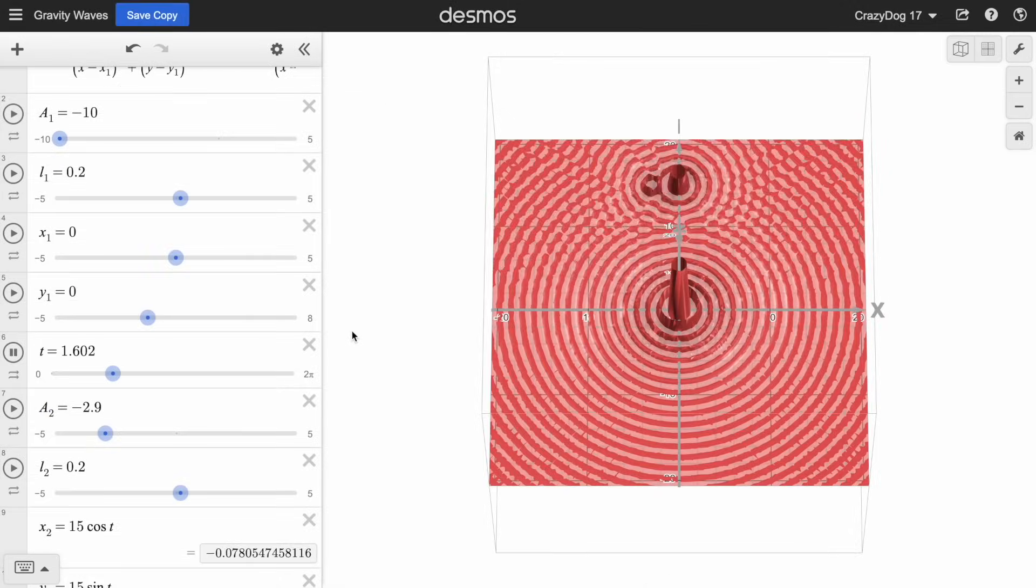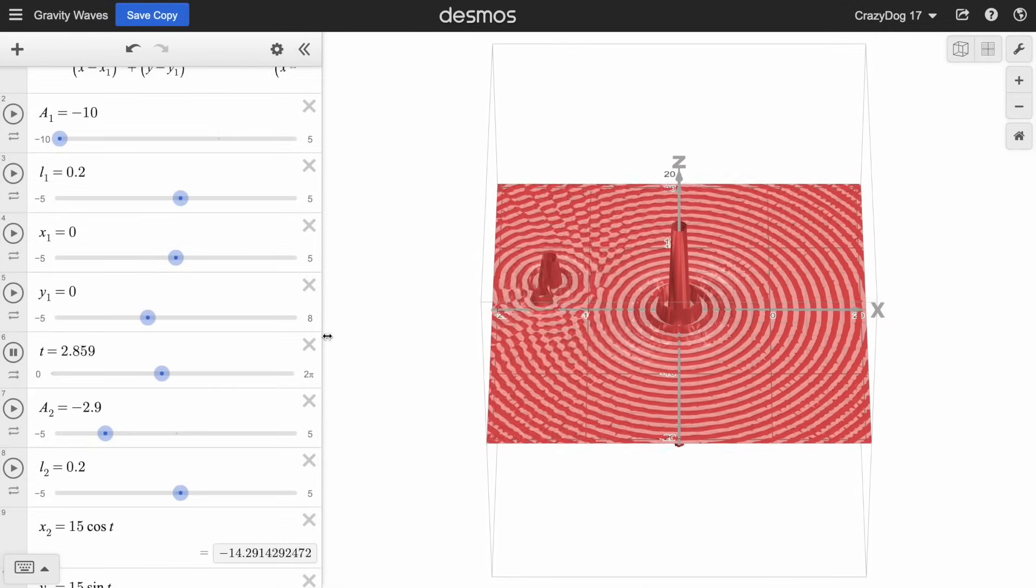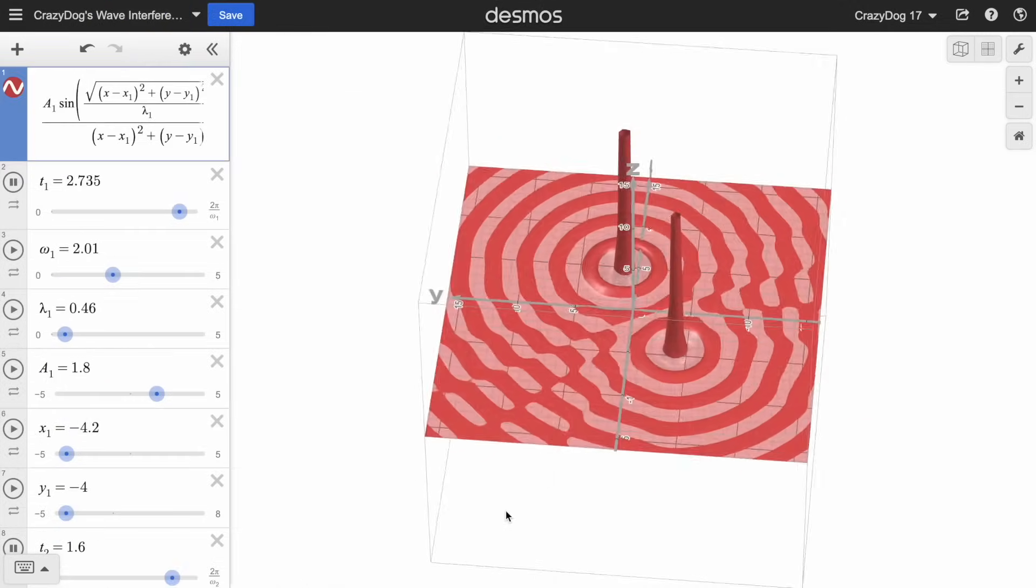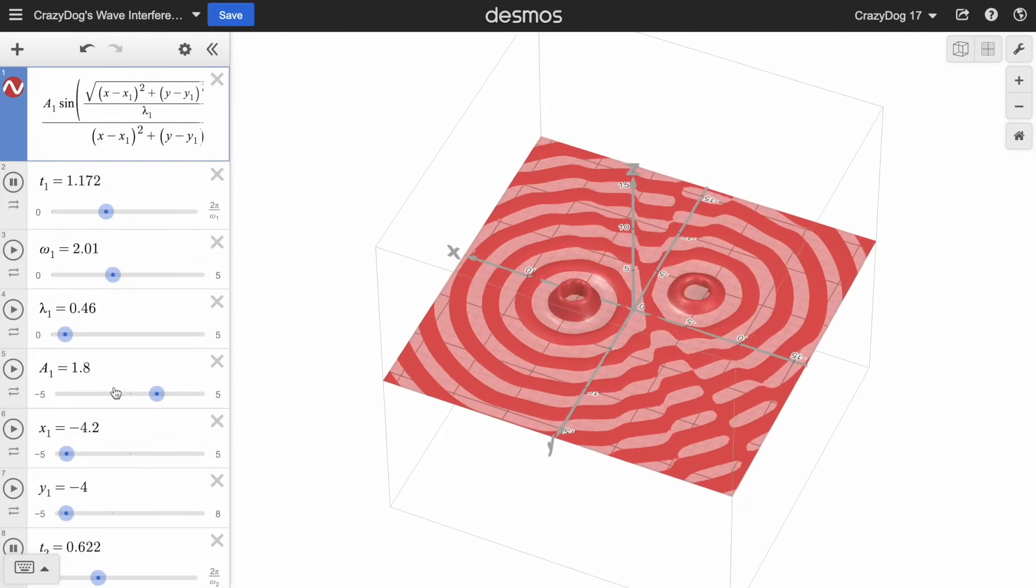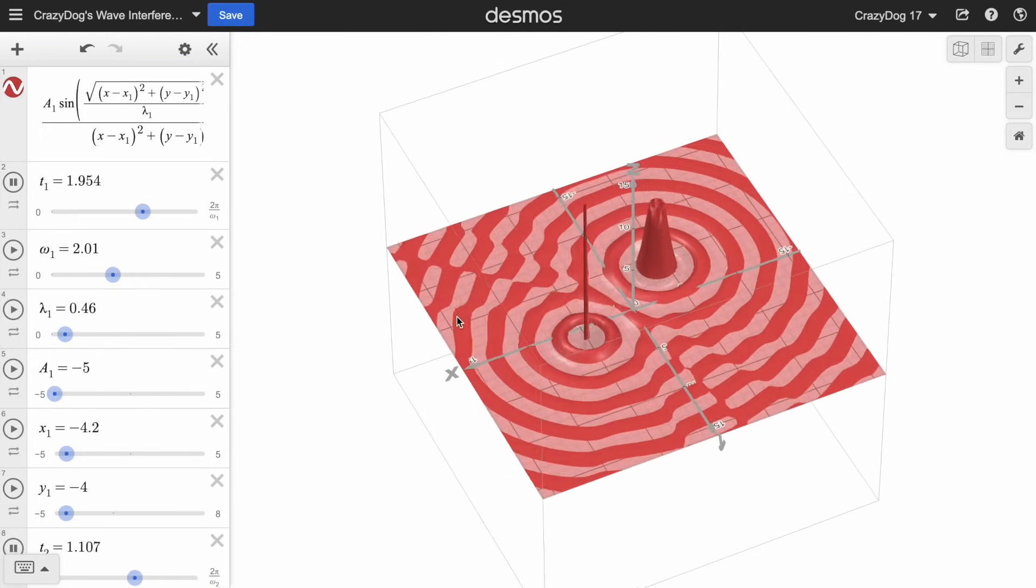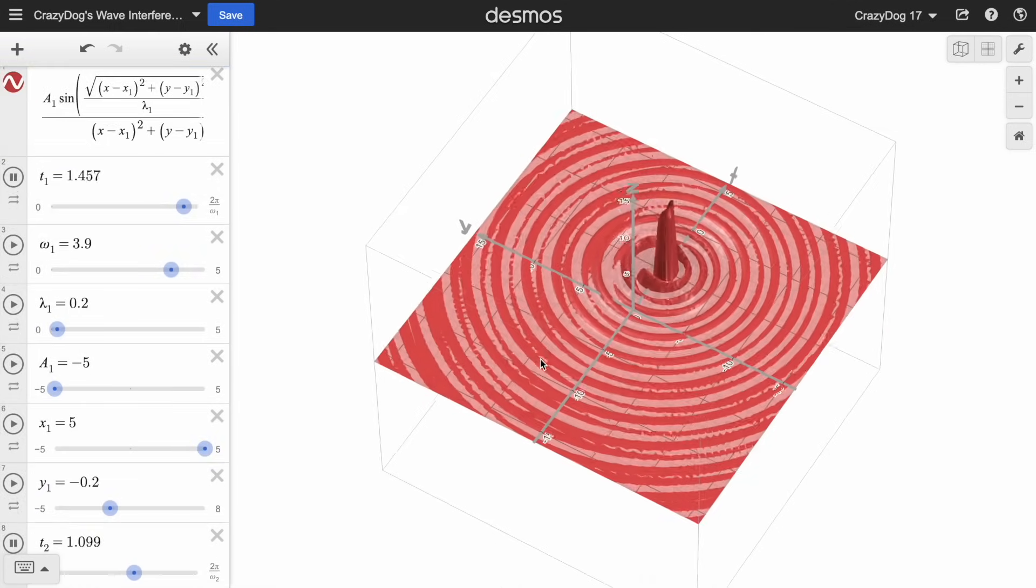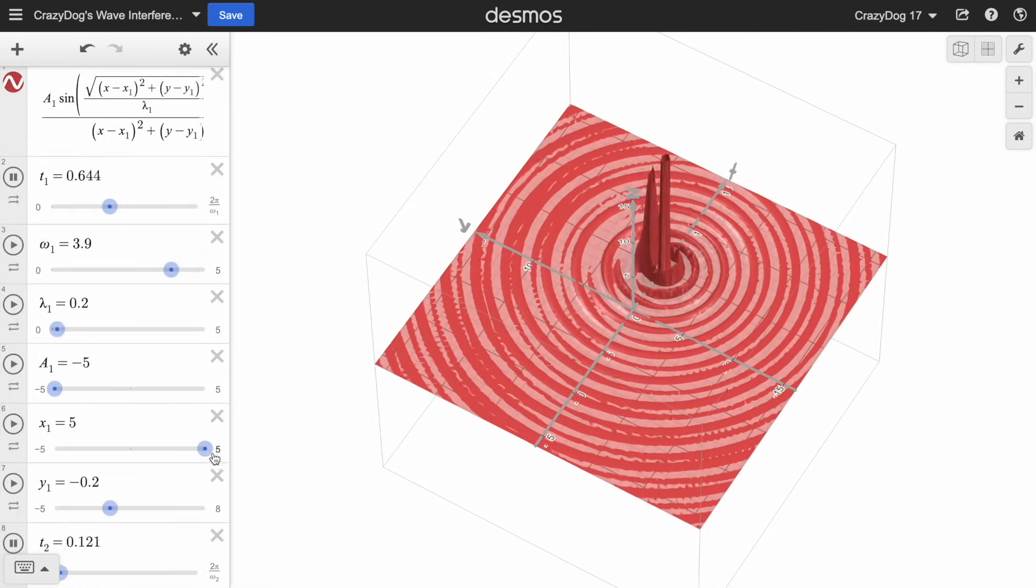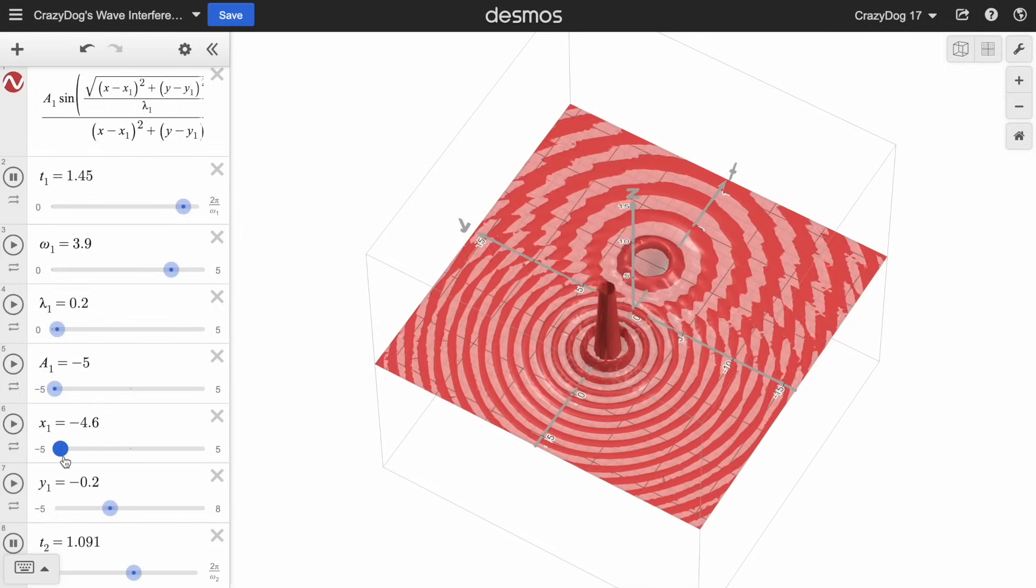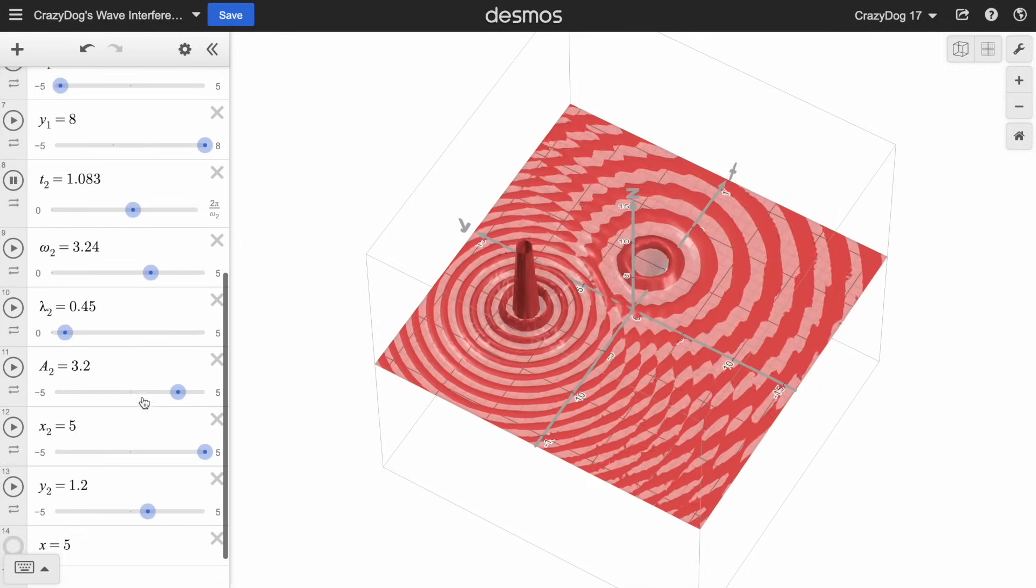It's not the most complicated code ever, but just having the ability to change the wavelengths, the amplitudes, and even the position of these waves to visualize wave propagation and wave interference is really incredible. The next time you read the news or start to get scared about something, just remember that we live in a time where we have 3D Desmos.